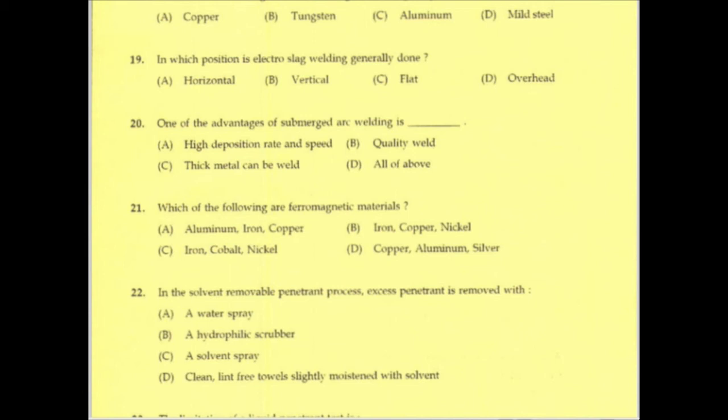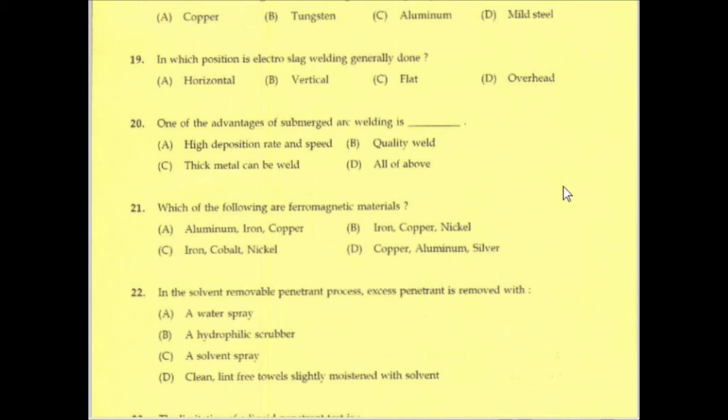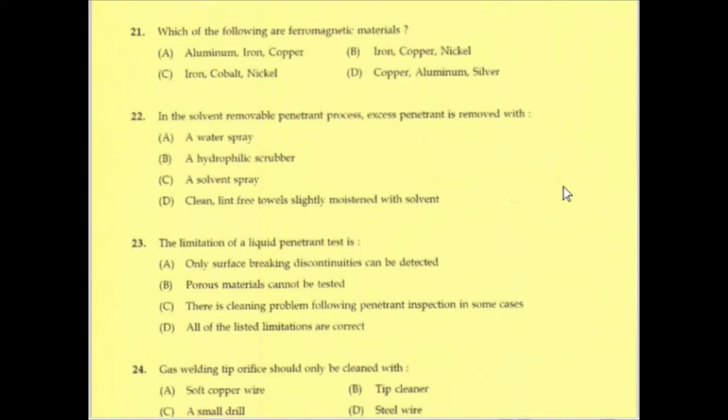Which of the following are ferromagnetic materials? In this question, two answers apply: iron, cobalt, and nickel are ferromagnetic materials, whereas copper, aluminum, and silver are not.